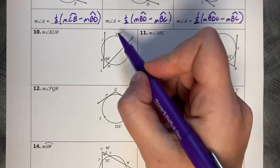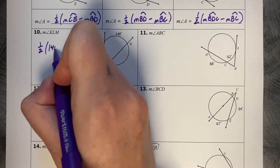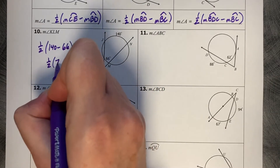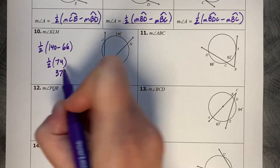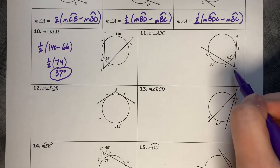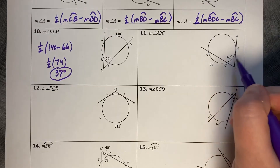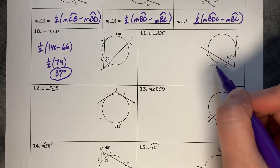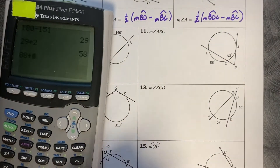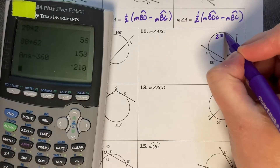Angle KLM: half the big minus the small — 140 minus 66 — which is a half of 74, which is 37 degrees. For angle ABC, I have the interior arc of 88 and the small arc of 62, but not the exterior. So 360 minus 88 minus 62 gives 210 degrees for the large arc.